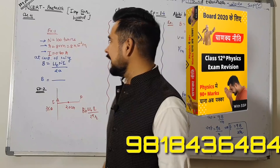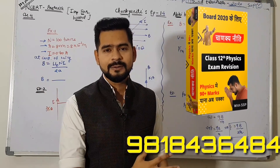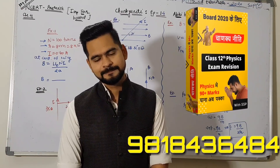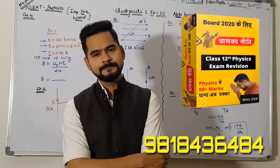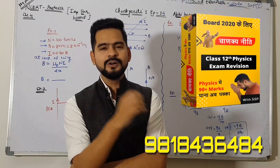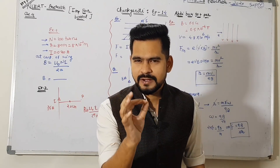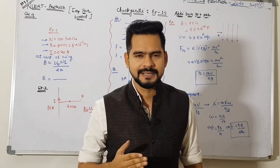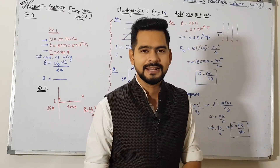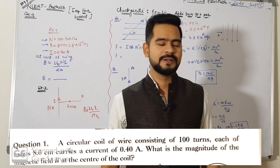Alright, so let's begin the class, Baccha Party. As you know, today is the NCRT exercise solution for Chapter 4. I will tell you that this is a very beautiful chapter - the most beautiful chapter in numerical terms. You will not face a lot of pain, because these problems in the NCRT exercise are directly formula-based. So let's see the very first question - Swastik Bhagawan, Sri Ganesh ko yaad karte huye, Baba Bajrangbali aur Bhagawan Bholenath ko yaad karte huye, SSP class ka shubhaarambh karte hain.